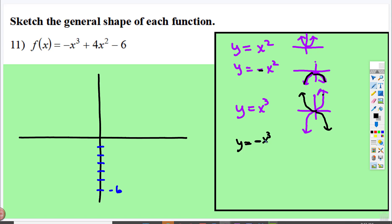So this right here is a negative x cubed. So the general shape looks like this. Now it could end up looking very curvy, but the general shape kind of looks like that.